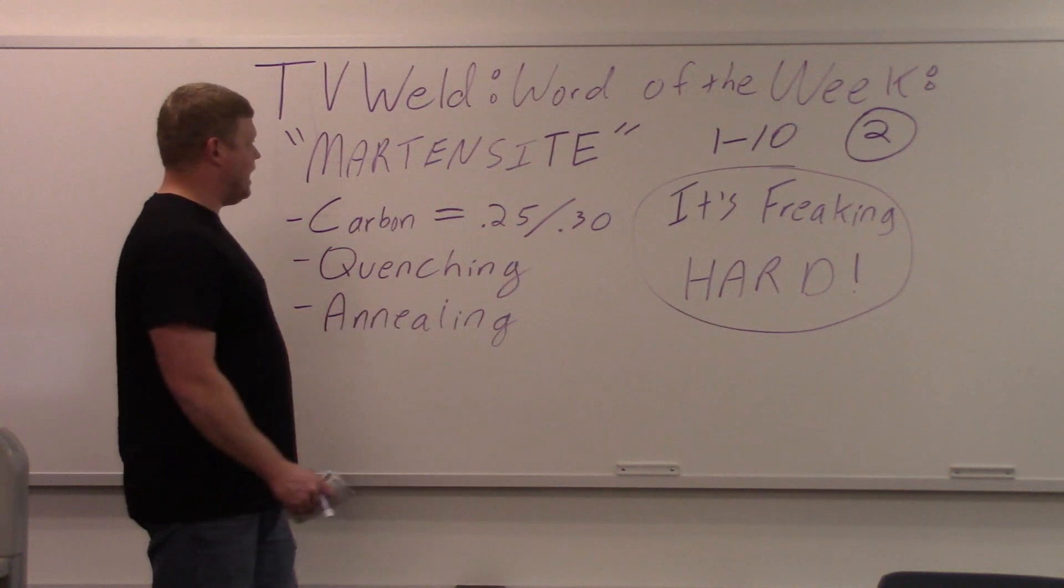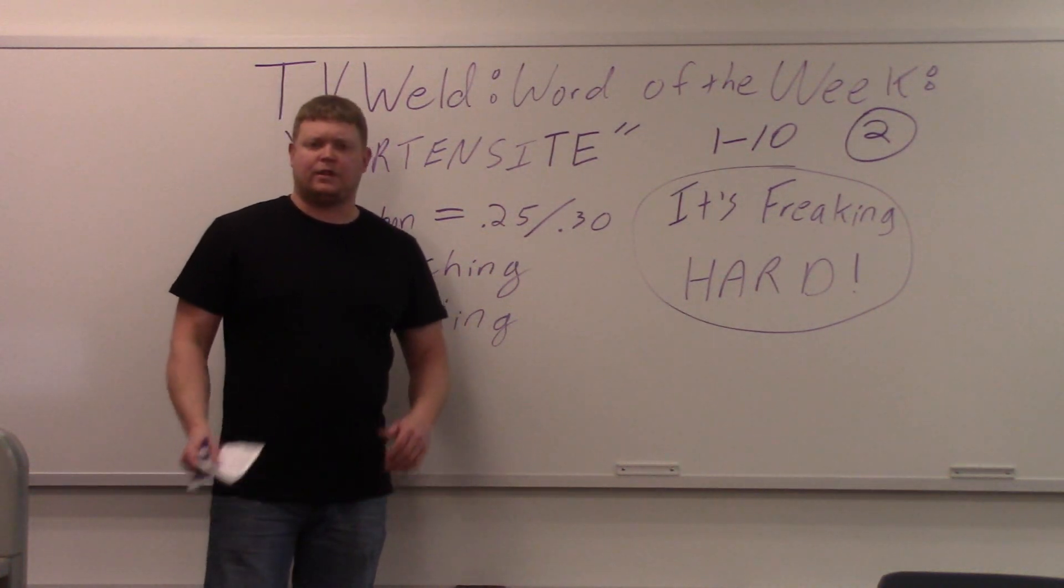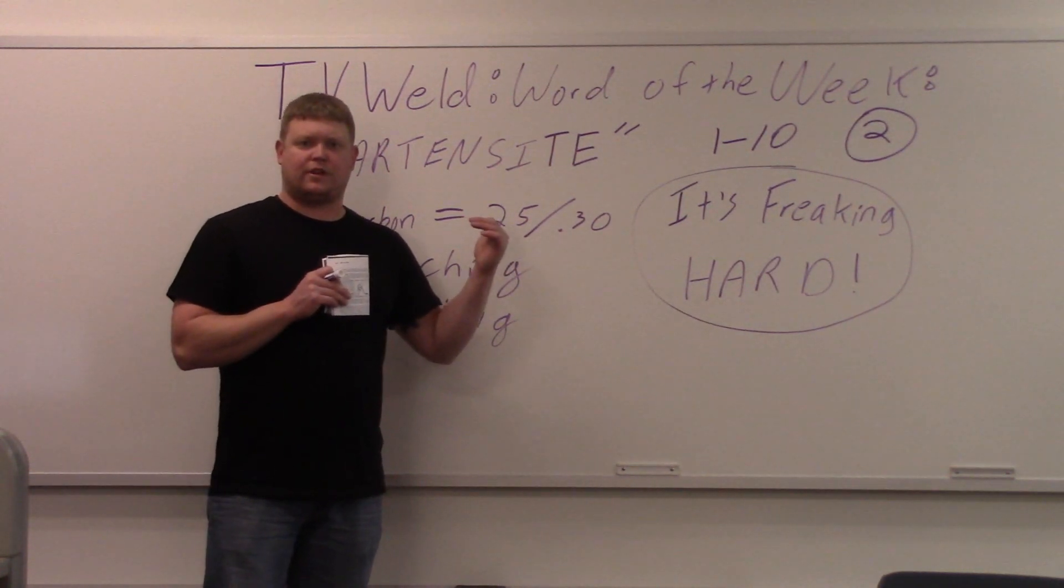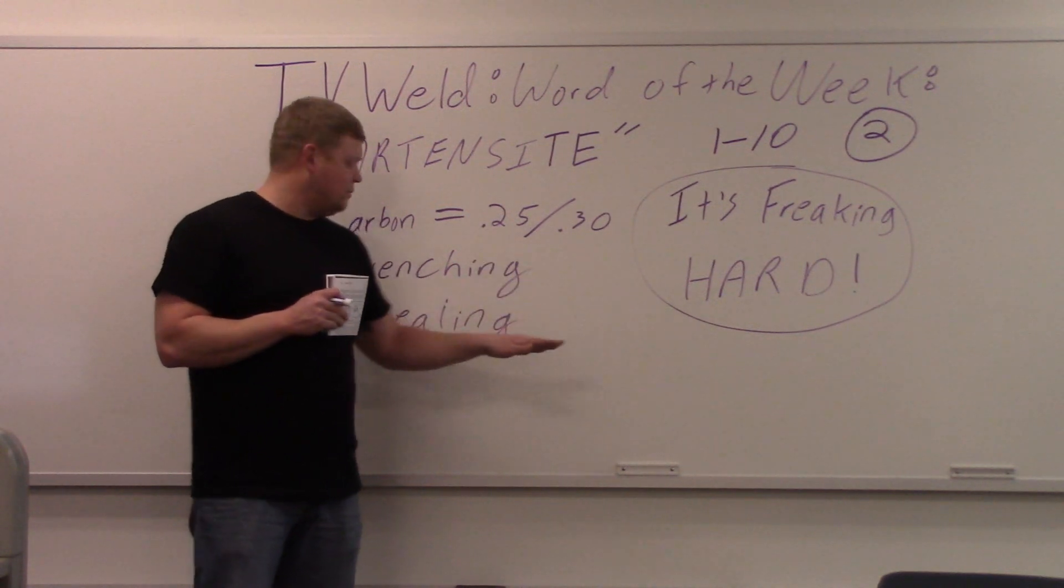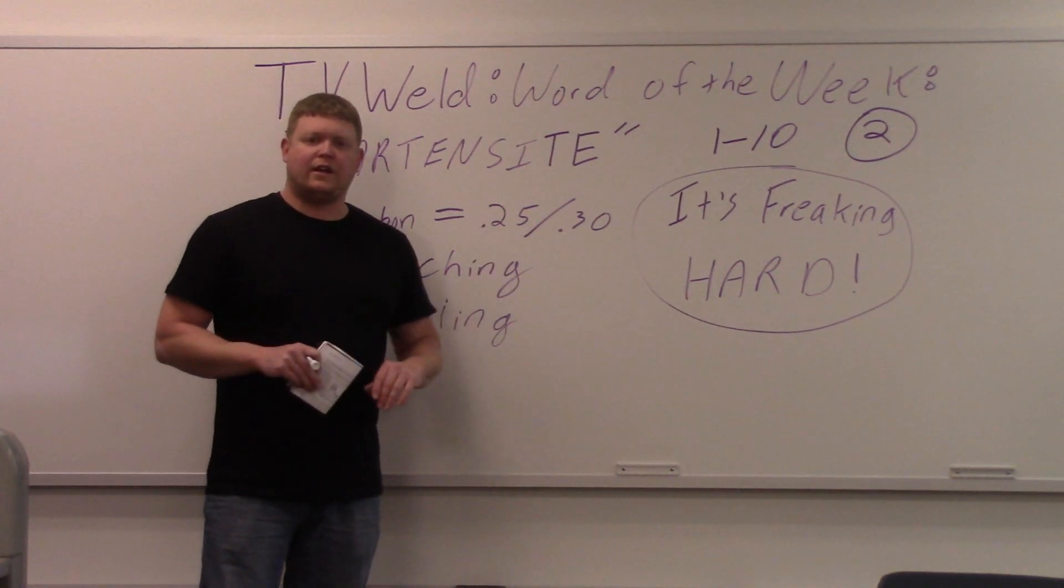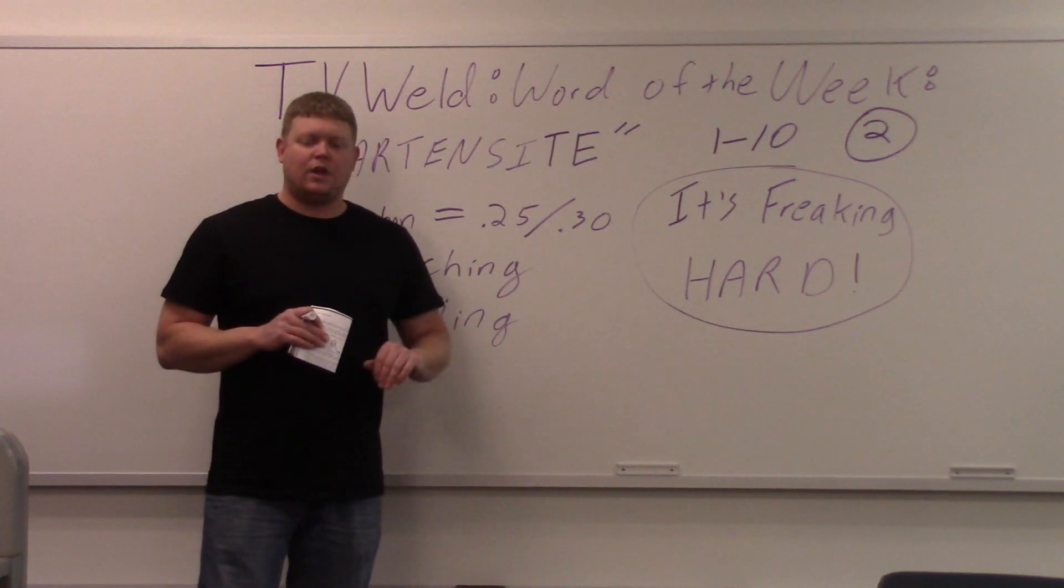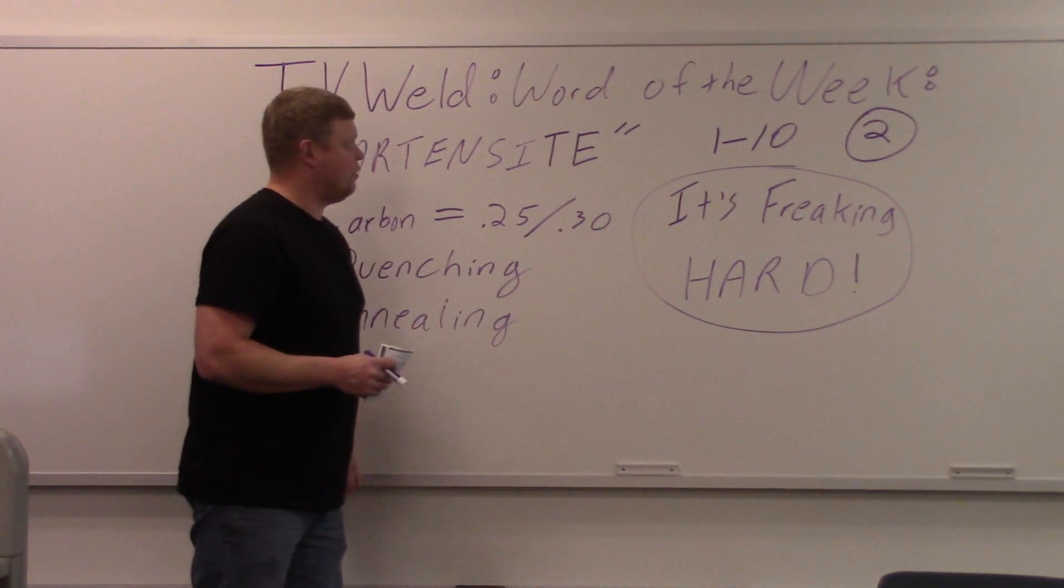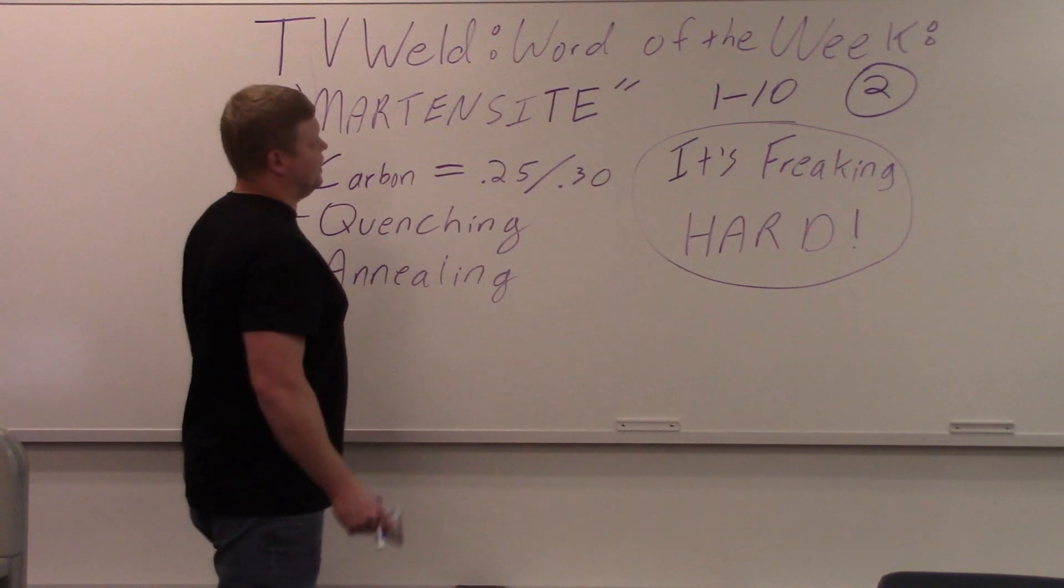I threw annealing on here too because you bring it back. If you wanted to bend something and let's say it was in a Martensite microstructure, you can anneal it. Annealing means you heat it up and slowly cool. That allows that carbon to diffuse. So let's pull up the board here and go over the process of how to form Martensite.